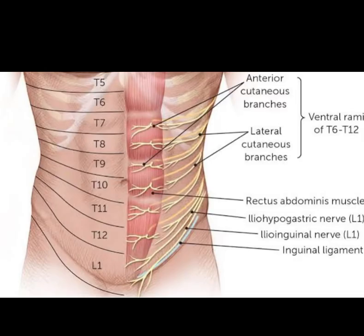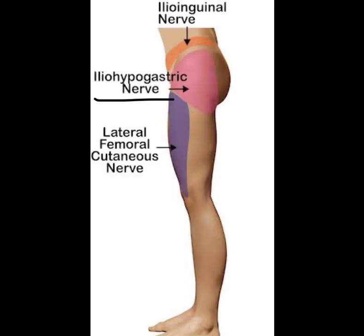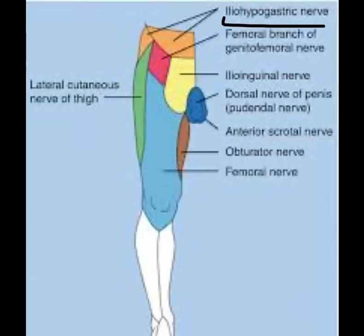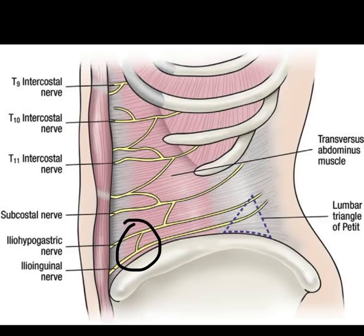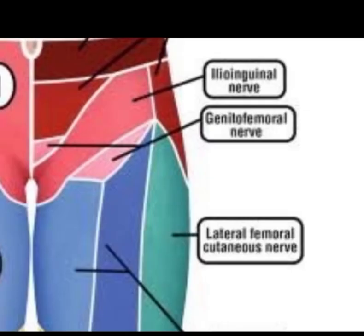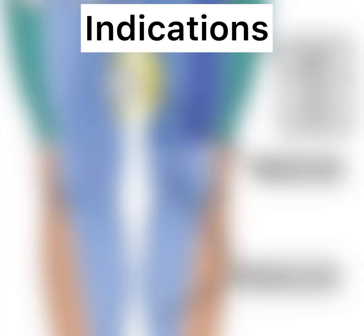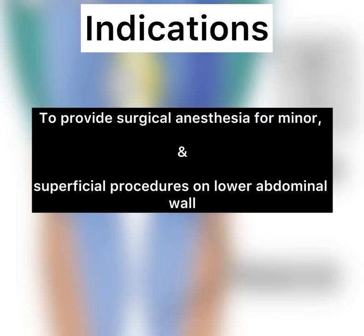T12 also communicates with the iliohypogastric nerve, supplying the gluteal region and hypogastric region. The ilioinguinal nerve communicates with the iliohypogastric nerve and supplies the upper and medial part of the thigh and part of the gluteal region.